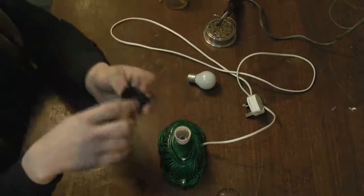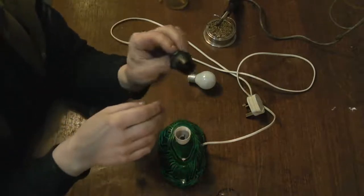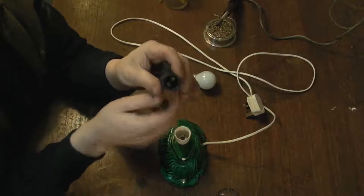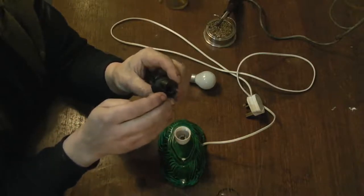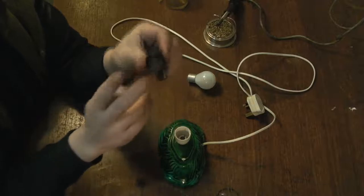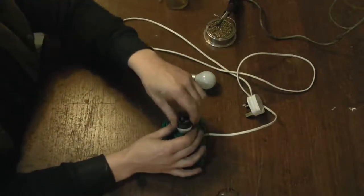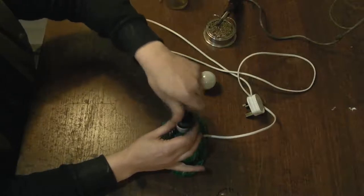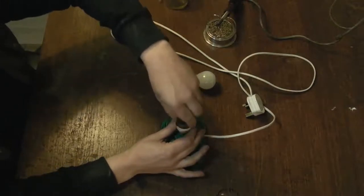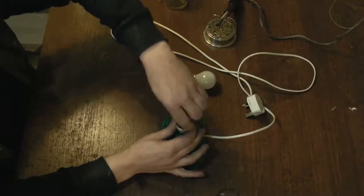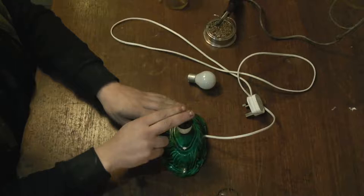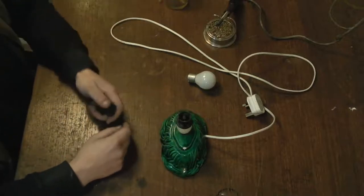I had a rummage in my bits box and I've got, basically it's the same thing, it's the same kind of lamp holder, bayonet style lamp holder. The only difference is this doesn't actually have a switch on it. It is the correct thread to thread into the base we've got on the lamp there. There we are. So it does actually fit correctly.